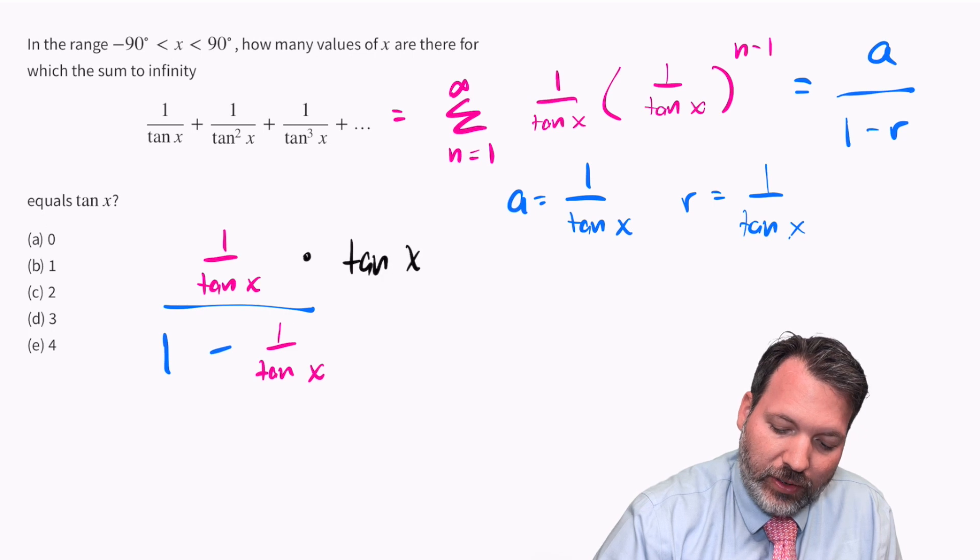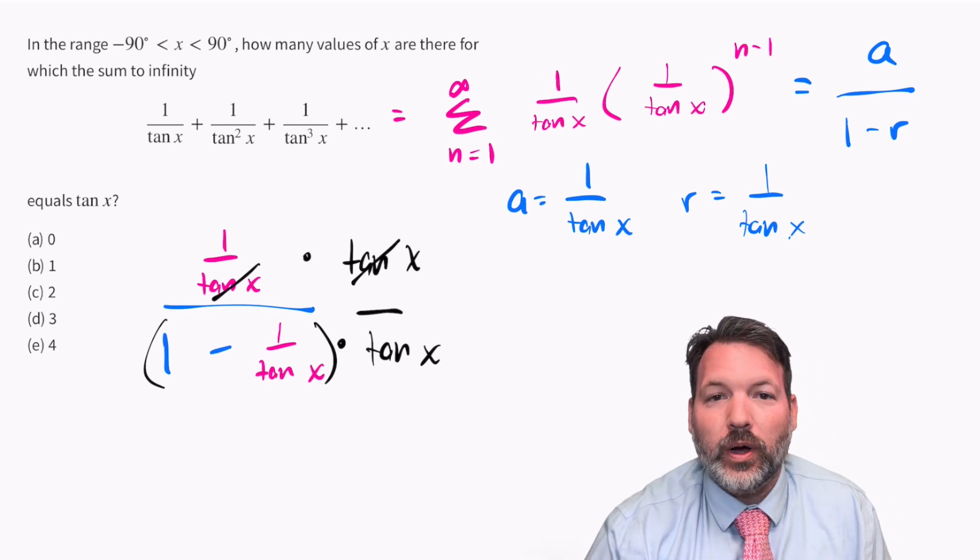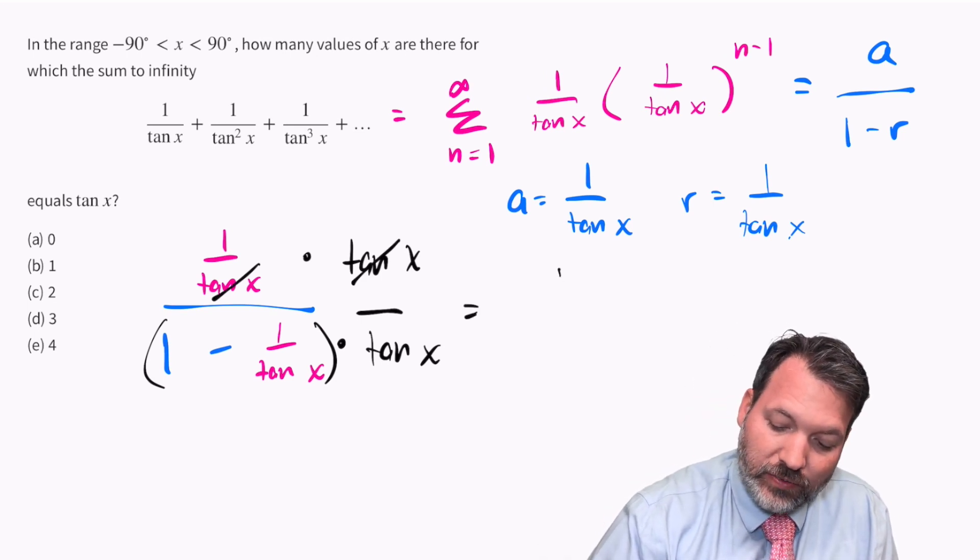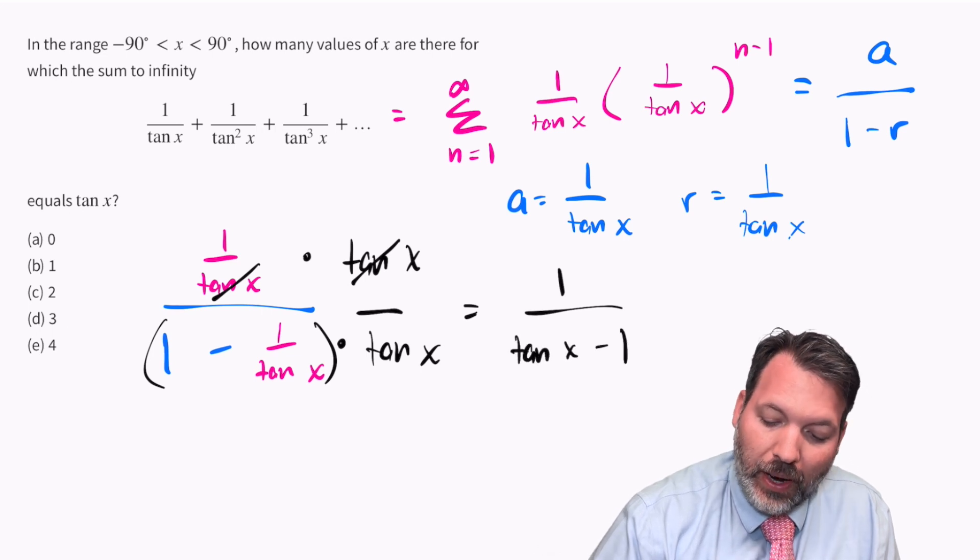We're going to distribute in the denominator and in the numerator. 1 over tangent x times tangent x just gives us back one, and our denominator ends up being tangent x minus one.